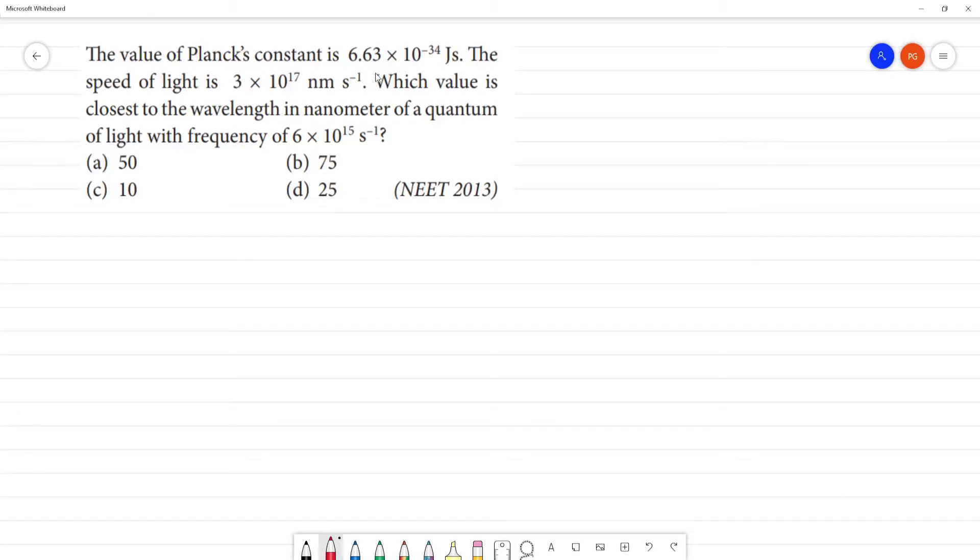The value of Planck's constant is 6.63 into the power minus 34 joules second. The speed of light, we can say c is equal to 3 into 10 to the power 17 nanometer second inverse.